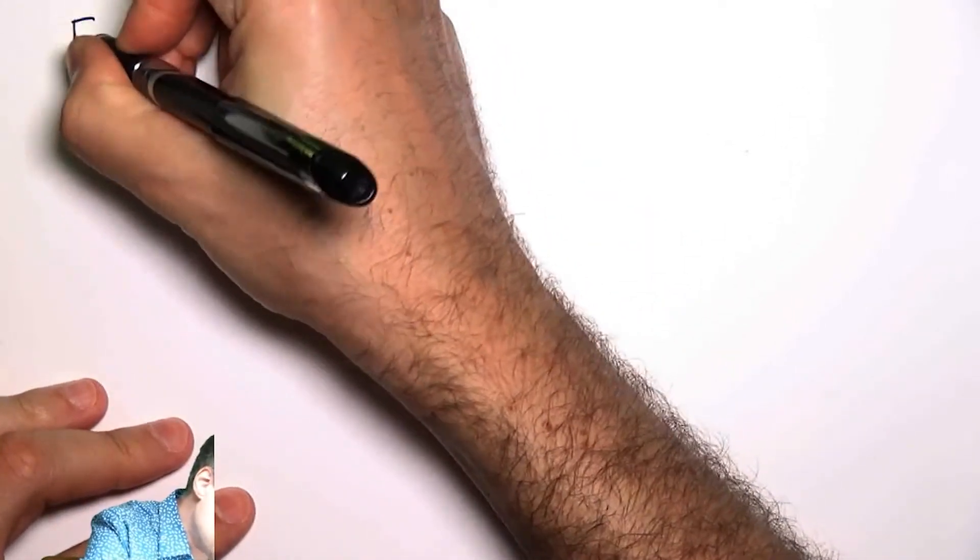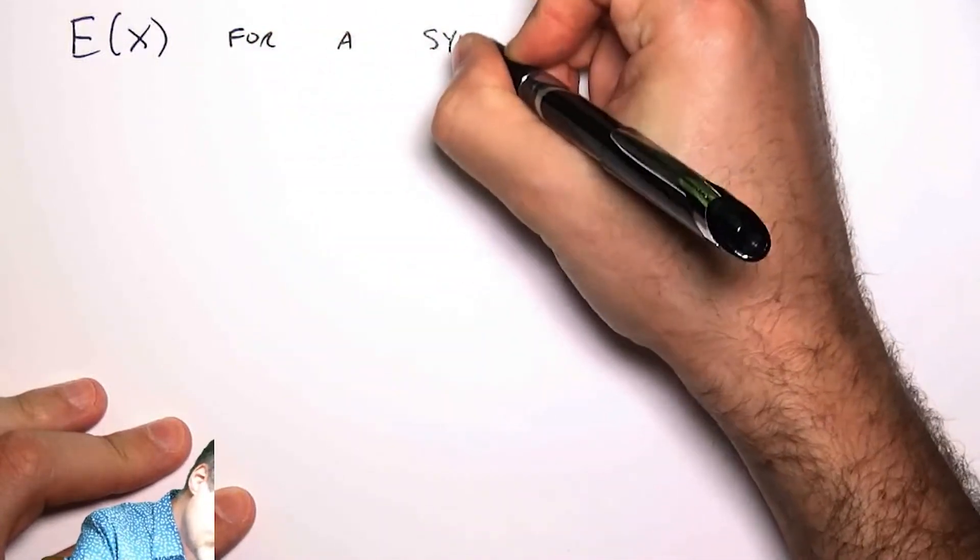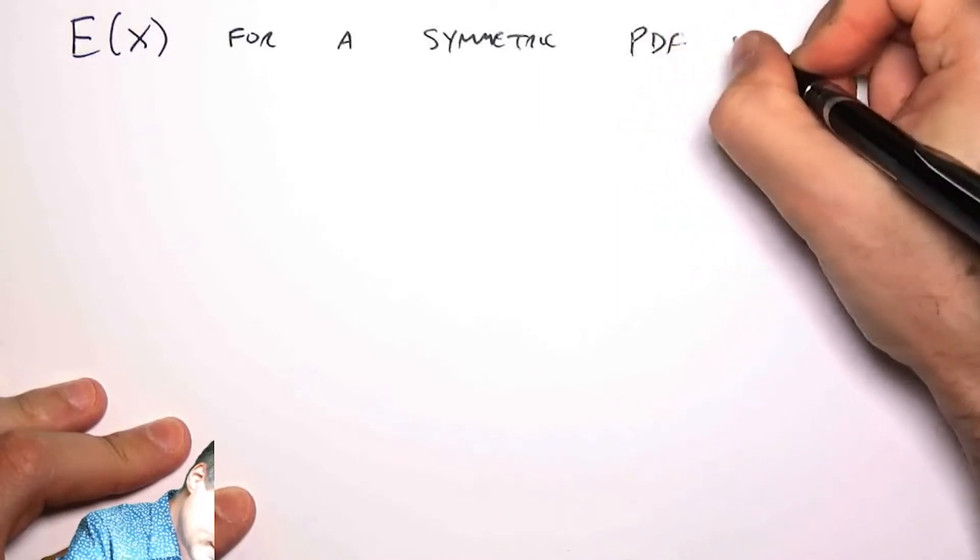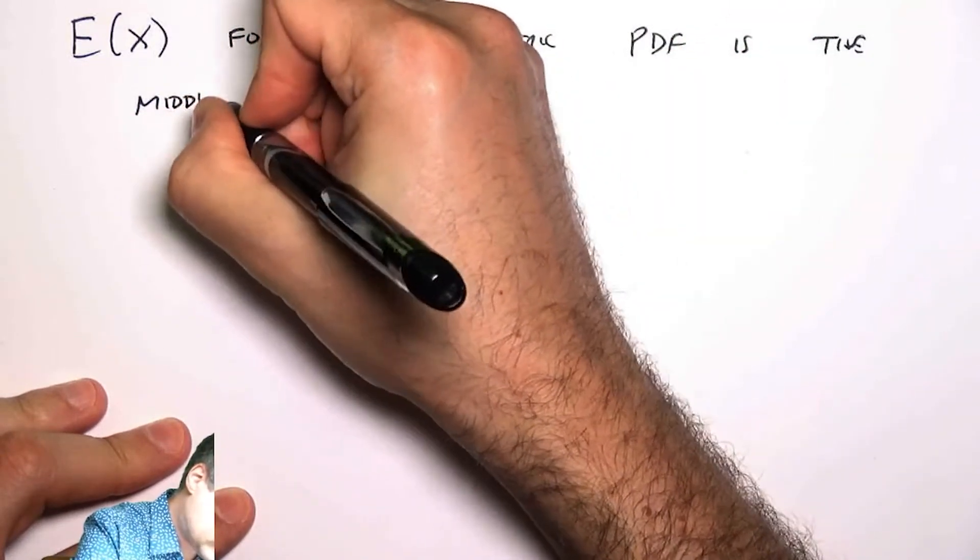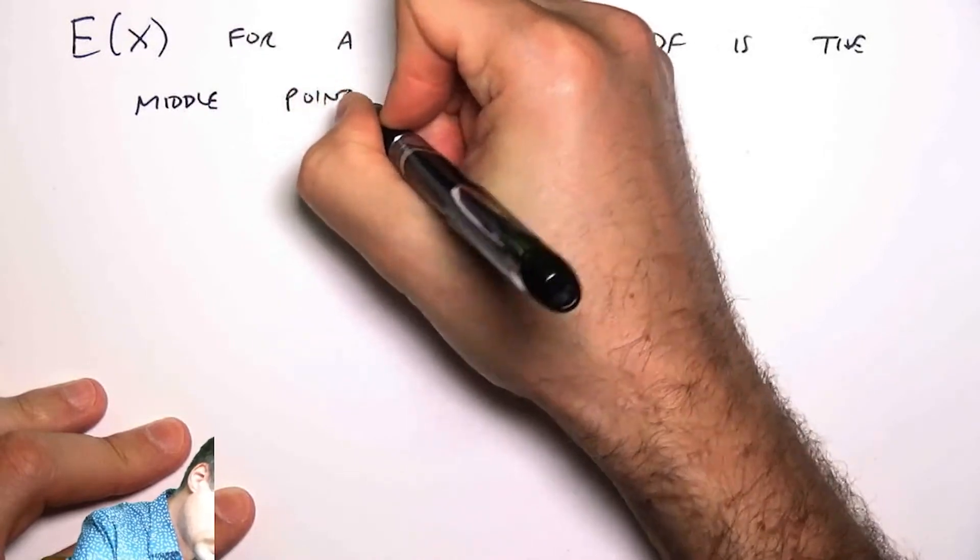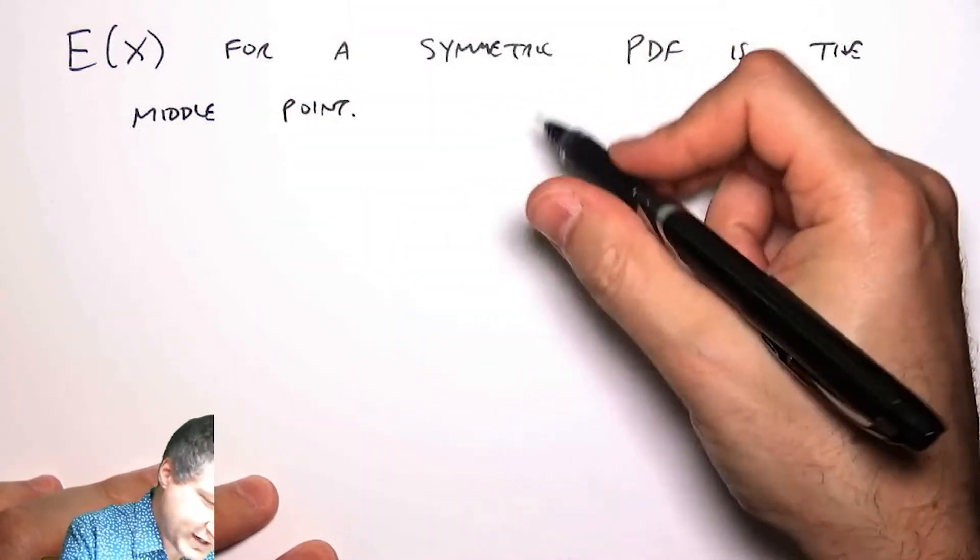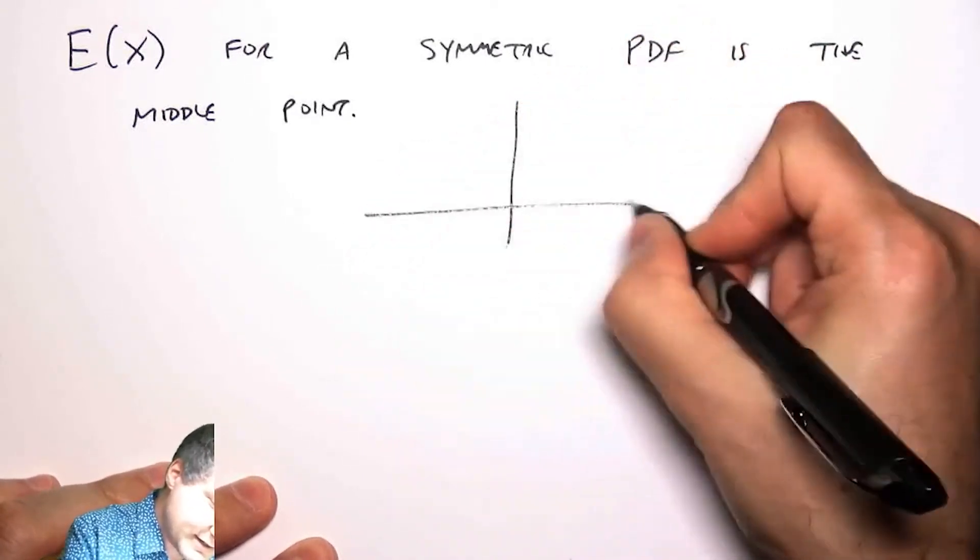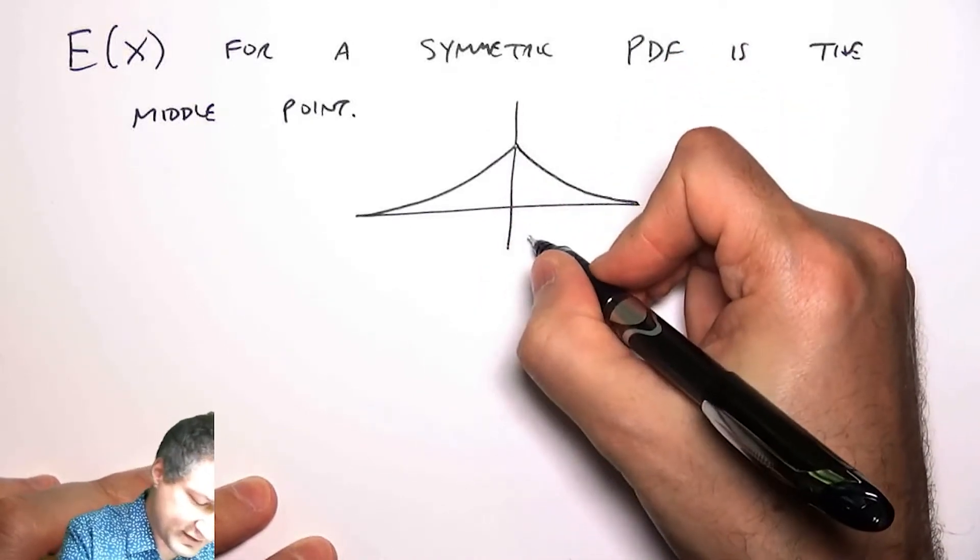So generally, the expected value for a symmetric PDF is the middle point. And for a really sketchy proof of why that's true, what I can imagine is to say, okay, suppose I've got some sort of arbitrary PDF. As long as everything integrates to 1, things are okay.